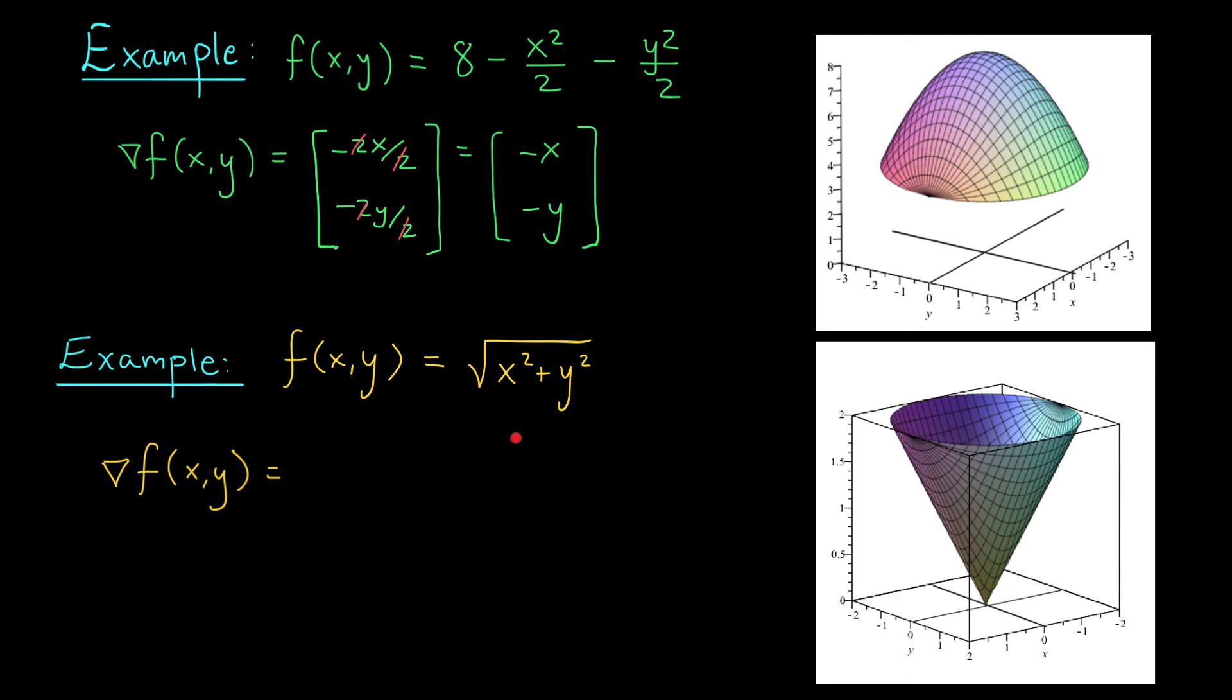We can do the exact same thing with this function, except now I think we'll probably need the chain rule. When I take the partial with respect to x, I do the derivative of the inside to get 2x. But when I take the derivative of the square root function, I get 1 over 2 times the square root of, now I leave the inside alone, x² plus y². Similarly, my partial derivative with respect to y is 2y divided by 2 times the square root, x² plus y². Once again, we cancel some 2's, and we're left with the vector x over √(x²+y²), y over √(x²+y²).